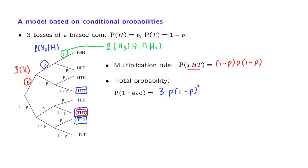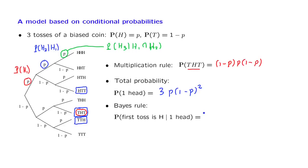Notice that each one of the three different ways this event can happen has the same probability, so these three outcomes are equally likely. Finally, let us calculate a conditional probability, which is essentially Bayes' rule.